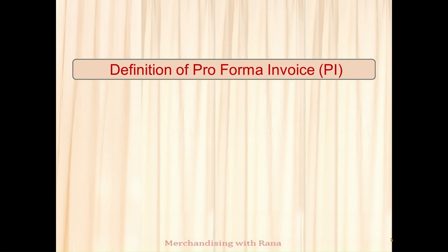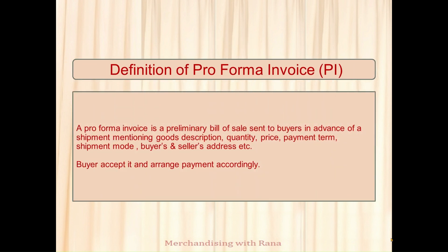A pro forma invoice is a preliminary bill of sale sent to buyers from a seller in advance of a shipment. When you place an order with a supplier, the supplier sends a document mentioning goods description, quantity, price, payment terms, shipping method, etc., so the buyer can verify that the order details and price are correct. This avoids disputes between buyer and seller once goods are ready, and buyers send payment according to the PI.